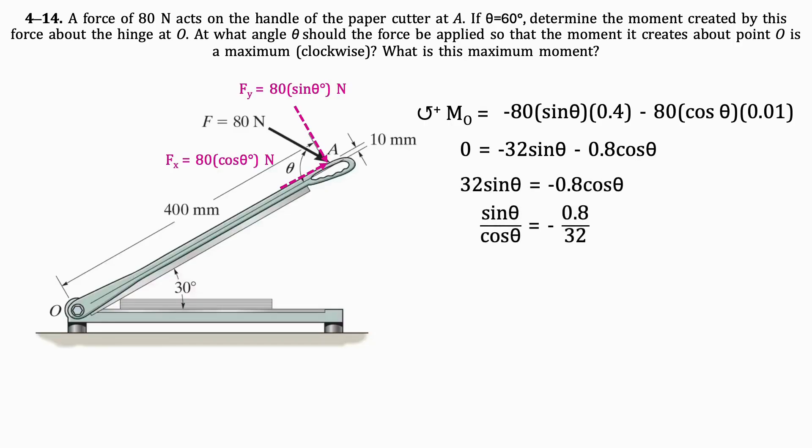By rearranging this equation to get sine theta over cosine theta, which can be further simplified to tan theta, we get that tan theta equals negative 0.025. Taking the tan inverse of 0.025, we get negative 1.43 degrees.